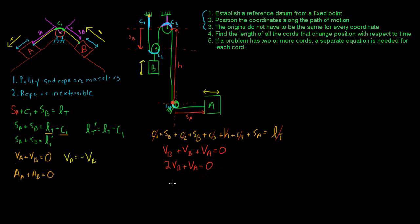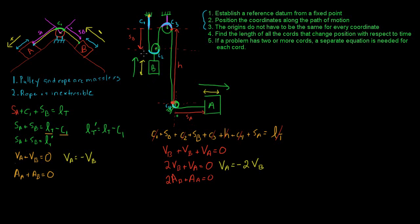Differentiating again gives 2 times the acceleration of B plus the acceleration of A equals zero. Looking at the velocity equation, V-A equals negative 2 V-B. So as A moves in the positive direction — to the right — B moves in the negative direction, meaning B moves up, opposing the positive direction of S-B. As you pull mass A to the right, B goes up, so this equation makes sense.